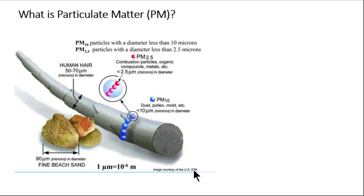We begin with a basic description of particulate air pollution. Large particles, instead, would be heavy enough to not stay suspended and, therefore, would settle to the ground due to gravity very soon after being emitted.